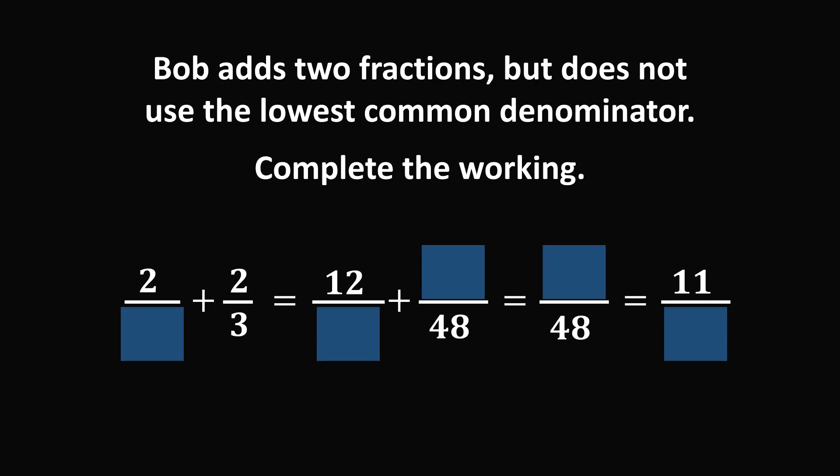And here is the sum. We have 2 divided by an unknown denominator, plus 2 over 3, is equal to 12 over an unknown denominator,